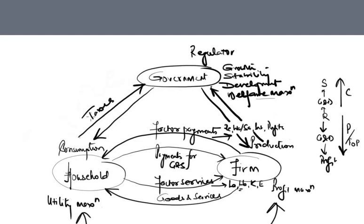This regulation happens through collection of taxes. From consumers, the government collects direct taxes in the form of income tax, wealth tax, and various other taxes charged from individuals and households. Similarly, the government also takes taxes from firms in the form of indirect taxes, excise duties, and various others on goods and services. On the other hand, the government might offer employment opportunities and direct transfers to individuals in the form of subsidies and many other benefits.